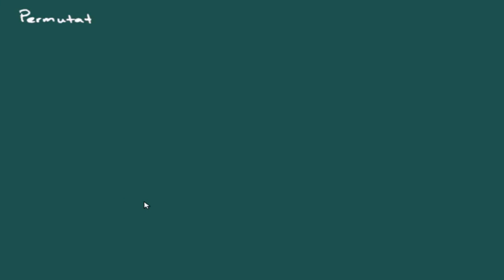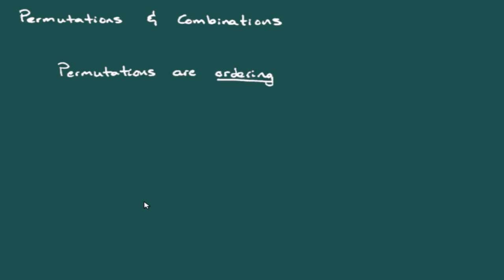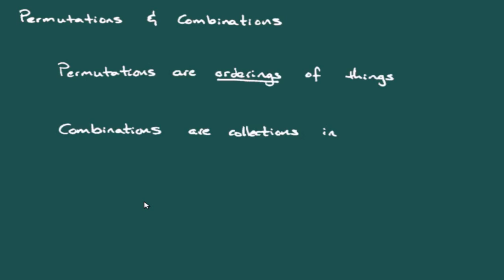In this video we'll be talking about permutations and combinations. A permutation is an ordering or an arrangement of things — the order in which things are placed actually matters. Combinations, on the other hand, are collections of things in which order really doesn't matter at all.